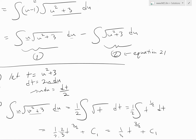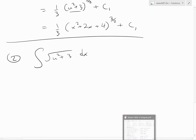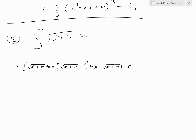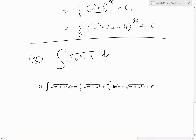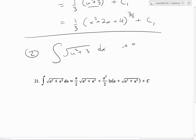Now for integral 2, we have the integral of the square root of u squared plus 3 du. Going back to the table, this is exactly equation 21, where a squared equals 3, meaning a equals the square root of 3.